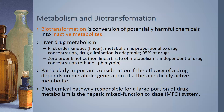The liver can metabolize drugs in different ways depending on the type of drug. First-order kinetics is a linear type of metabolism where the rate is proportional to drug concentration — drug elimination is adaptable, and 95% of drugs follow first-order kinetics: the more drug you have, the faster it is metabolized. Zero-order kinetics is non-linear, where the rate of metabolism is completely independent of drug concentration — examples include ethanol and phenytoin — so it is purely a factor of time.